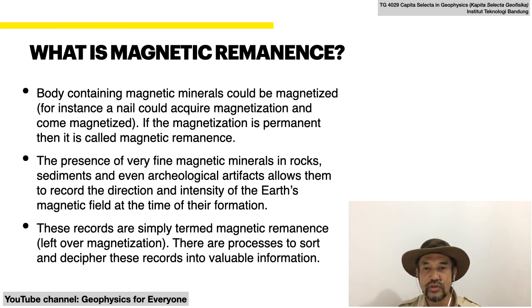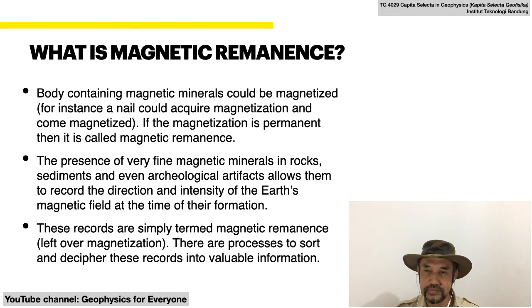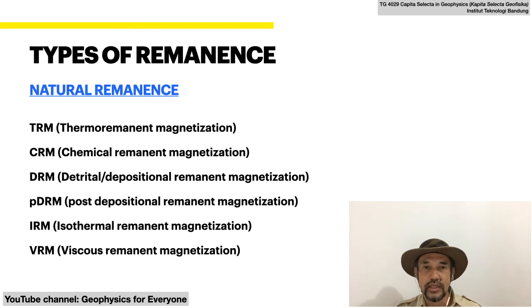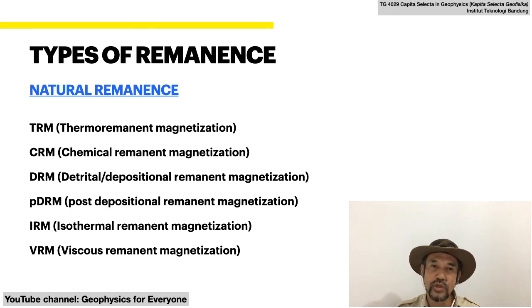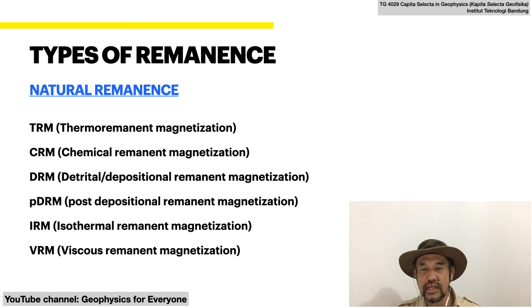There are processes to sort and decipher these records into valuable information. Natural remanence can be divided into specific categories. The first one is called thermoremanent magnetization, or TRM. This type of magnetization happens when a substance becomes cooler and cooler, passing below a critical temperature.